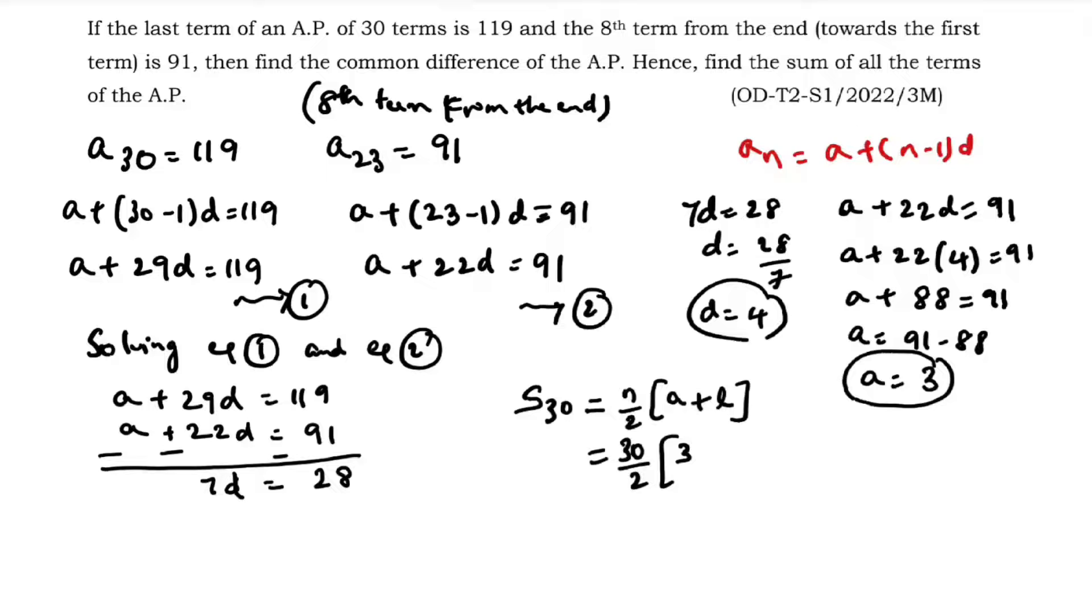3 plus 119 is 122. Now if you multiply 122 into 15, you'll get 1830.